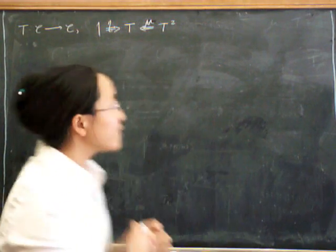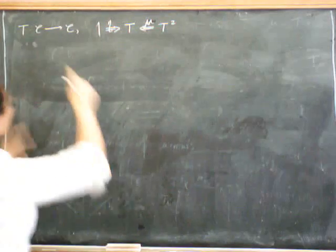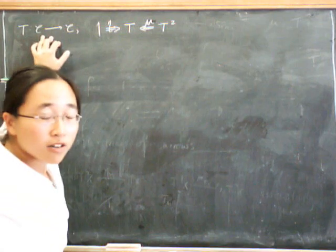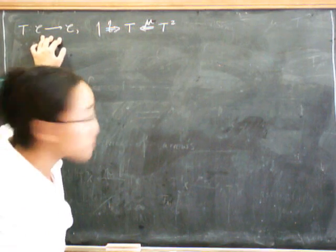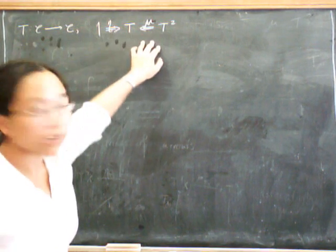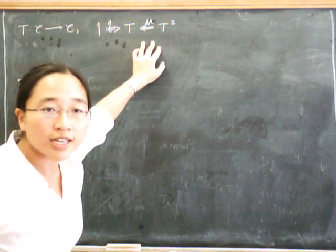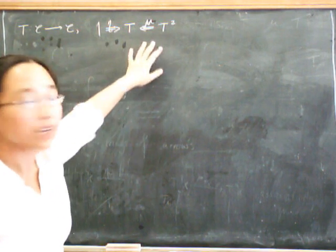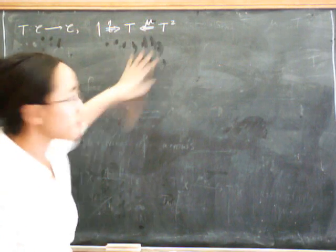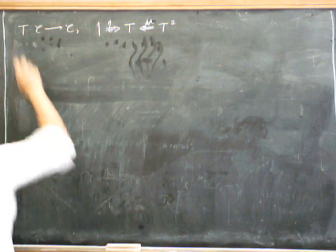Here's the definition. Remember that a monad is a functor on a particular category from C to C, together with natural transformations eta and mu, which tell us the unit and the multiplication for this monad.